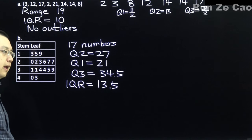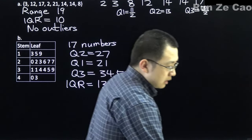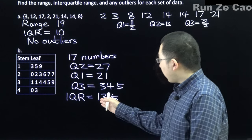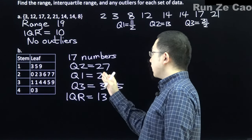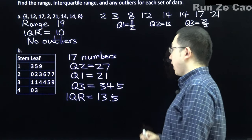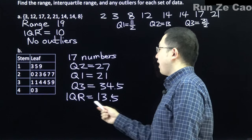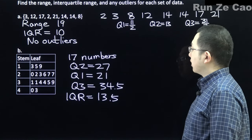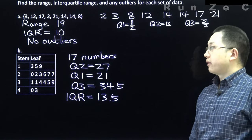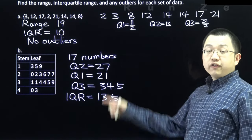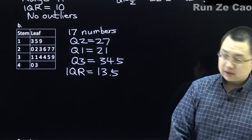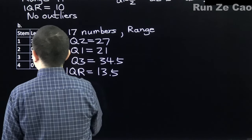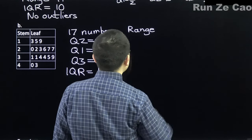Are there any outliers? The definition requires values more than 1.5 IQRs outside Q1 and Q3. Since 43 is not that far beyond 34.5, and 13 isn't that far less than 21, there are no outliers. The range for this dataset is 43 minus 13 = 30.